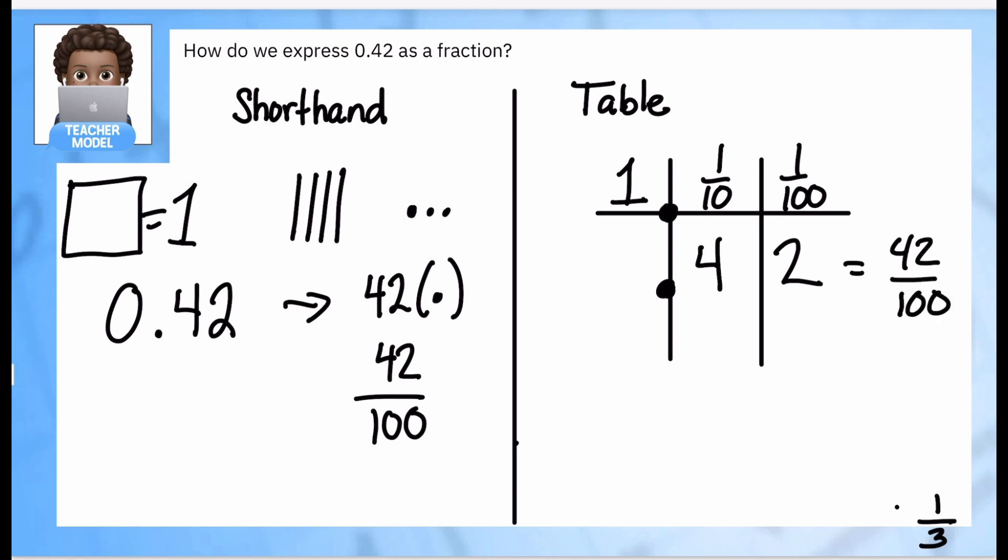So 42 hundredths. The place to look is on your table—look to see where that last digit is. That's going to tell you what kind of denominator you're going to have. So hit pause and jot this down into your notes.